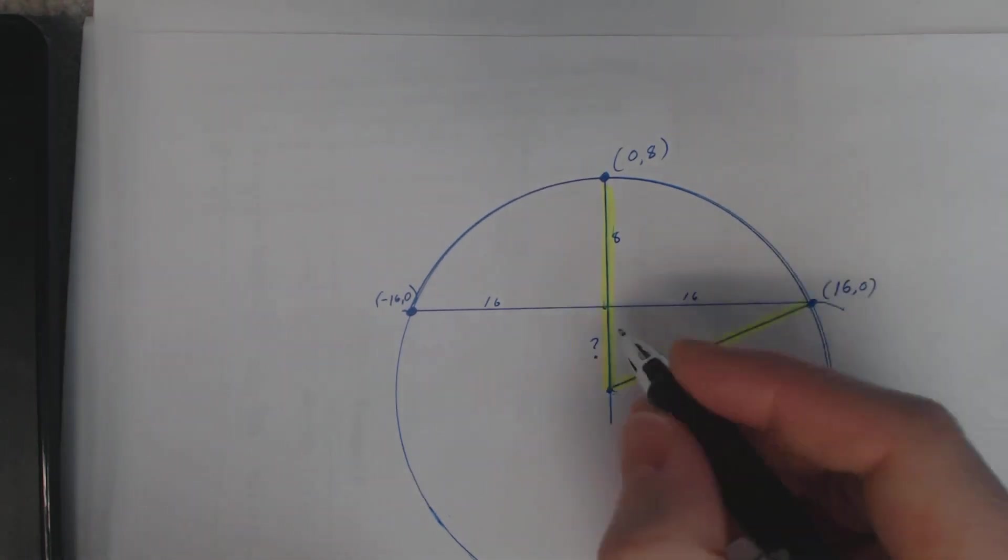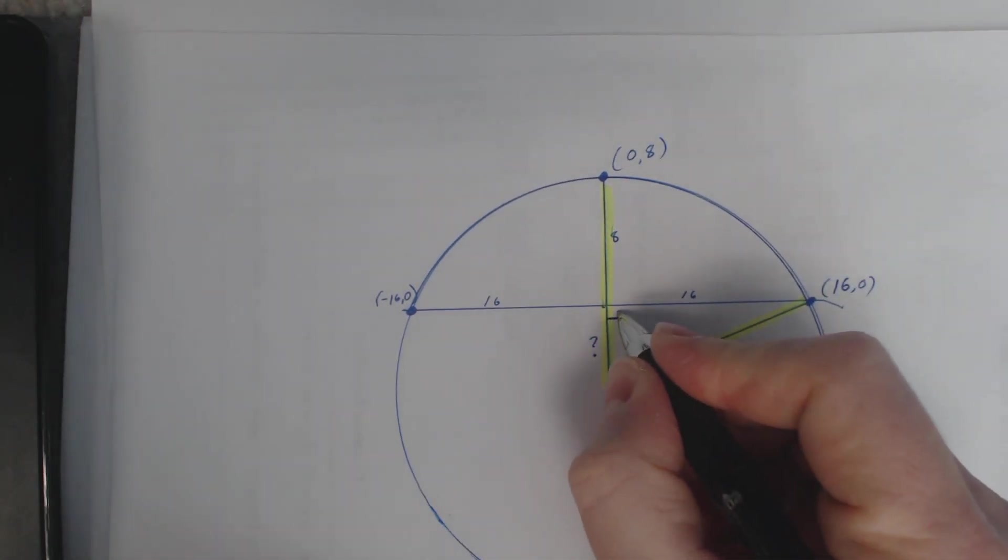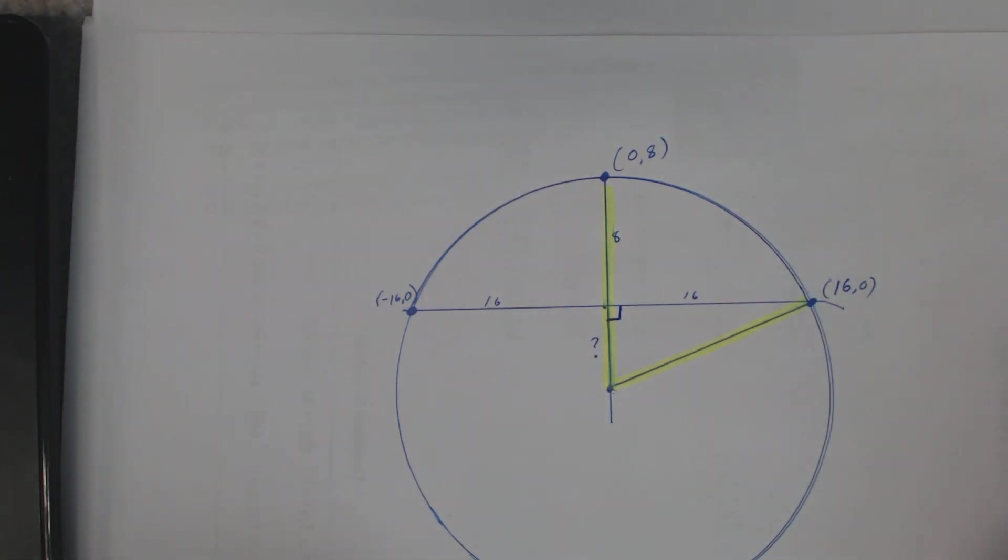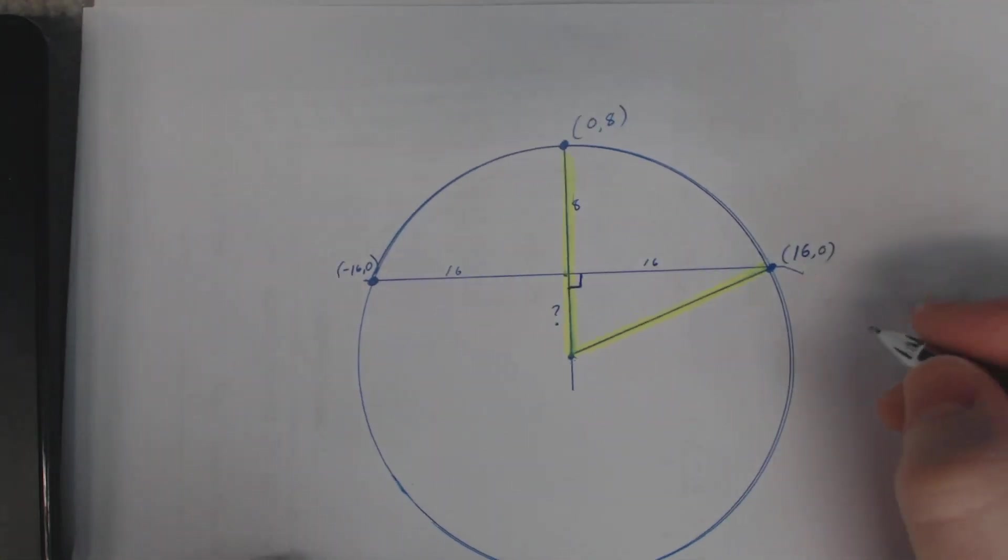So the thing that jumps out at me is that I have a right triangle. That always jumps out at me when I have a right triangle, because I know a few things about right triangles. I know that in a right triangle, a squared plus b squared equals c squared, where c is the hypotenuse. Remember Pythagorean's theorem? Sure you do.